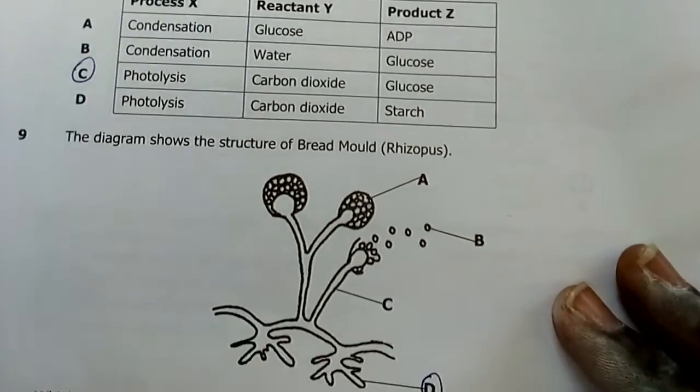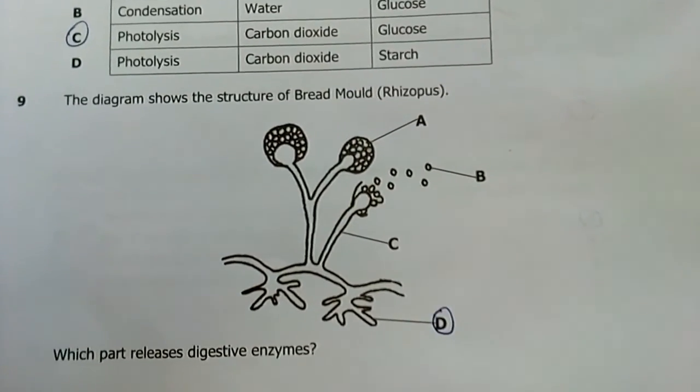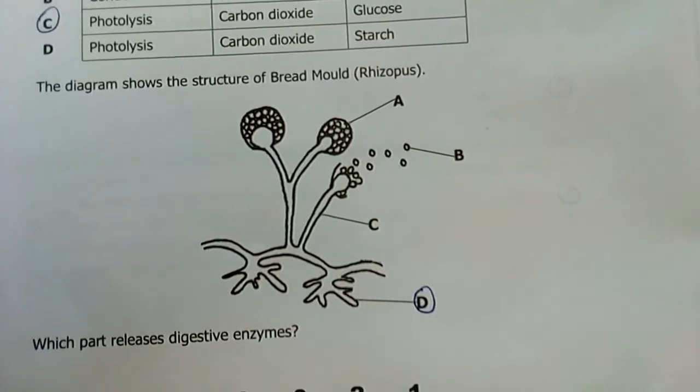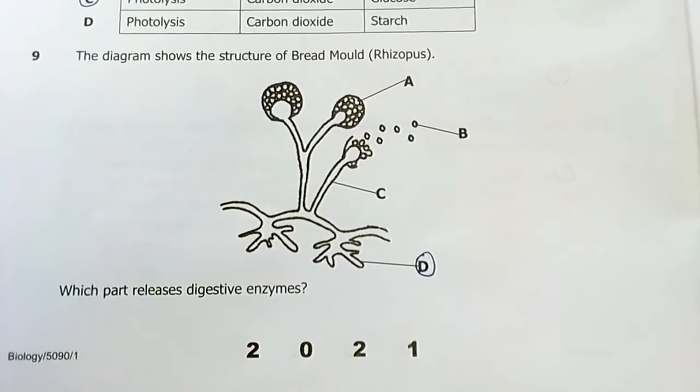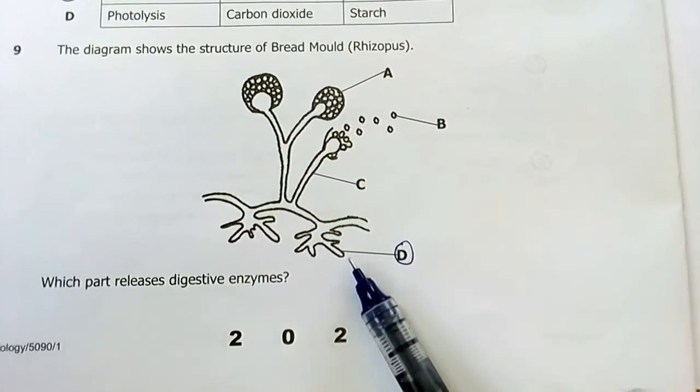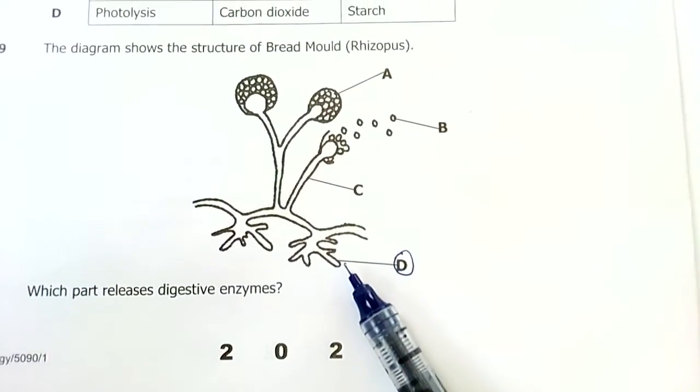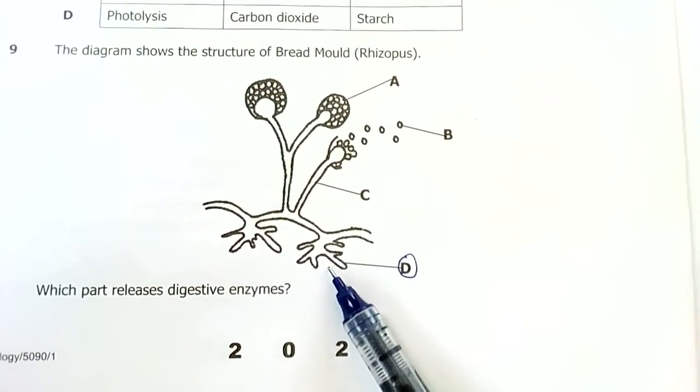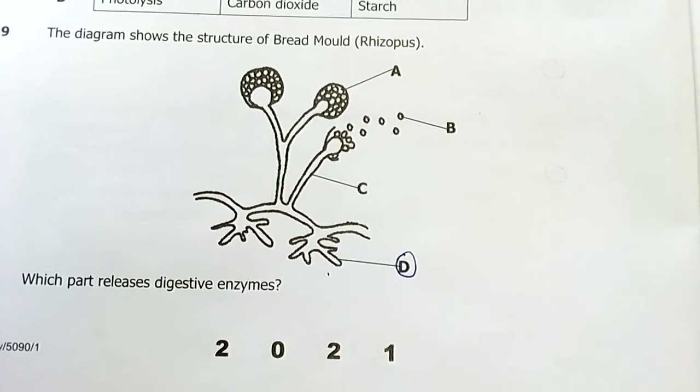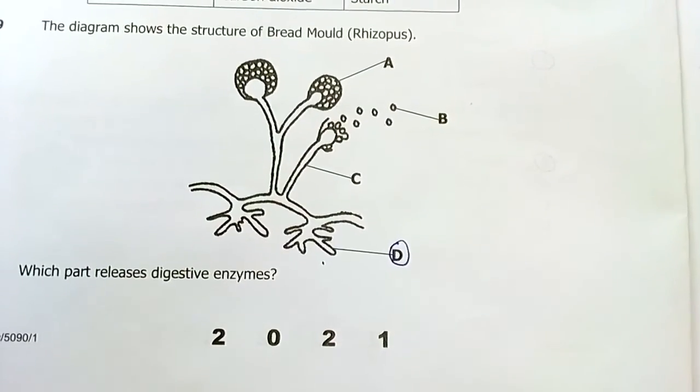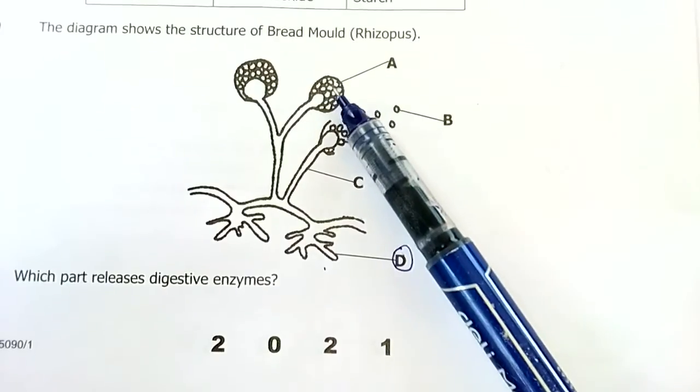Number nine: the diagram shows the structure of bread mold or Rhizopus. Which part releases digestive enzymes? These rhizoids, the root-like structures, the root hyphae that grow into the substrate, release enzymes there then absorb the end product of digestion through saprophytic nutrition. B is the answer.